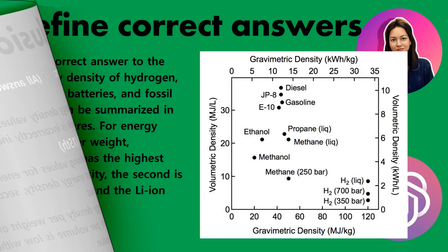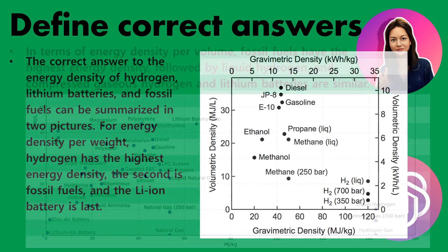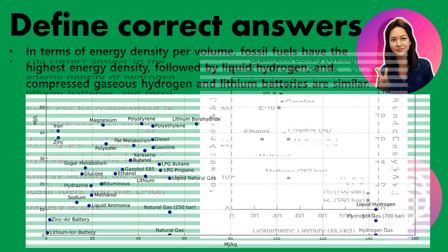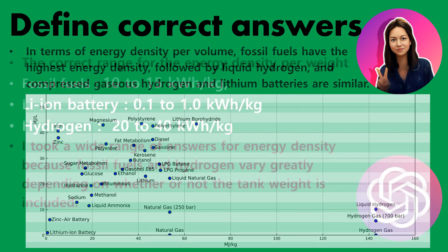The correct answer to the energy density of hydrogen, lithium batteries, and fossil fuels can be summarized in two pictures. For energy density per weight, hydrogen has the highest energy density, the second is fossil fuels, and the Li-ion battery is last. In terms of energy density per volume, fossil fuels have the highest energy density, followed by liquid hydrogen and compressed gaseous hydrogen, and lithium batteries are similar.